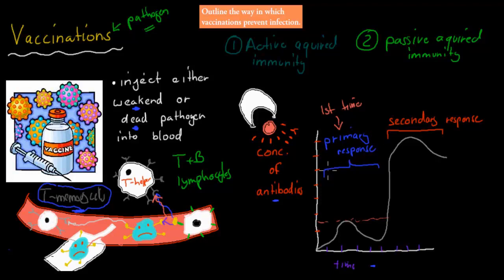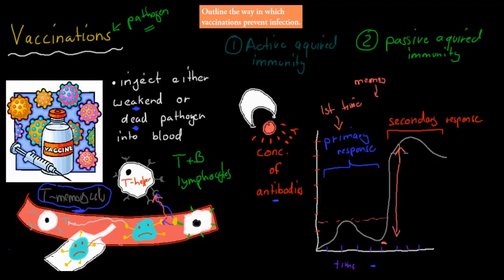When your primary response has really kicked in, you notice the infection. The first time you're introduced to a pathogen it takes some time. But the second time — this is where memory cells come into play — in a really short period of time, we have a huge increase in antibodies.